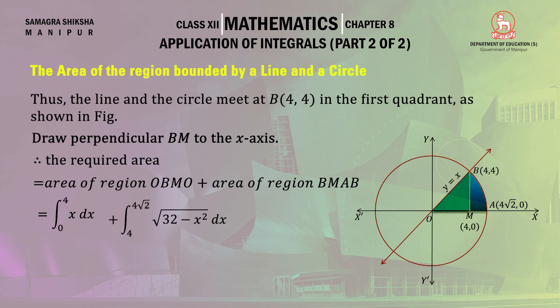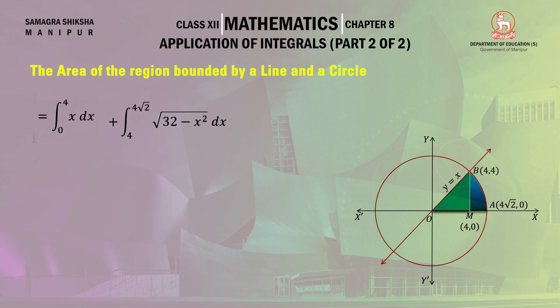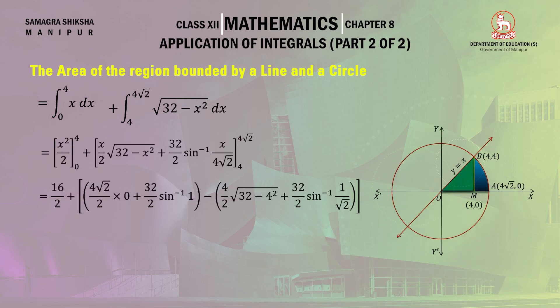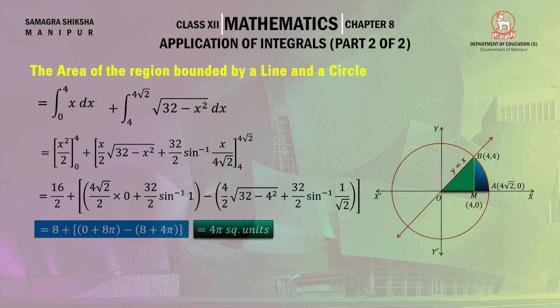The area of the green region is the definite integral from 0 to 4 of y dx, where y equal to x. The area of the blue region is the integral from 4 to 4 root 2 of y dx, where y is given by the equation of the circle as root over 32 minus x square. Evaluating using the fundamental theorem of integral calculus, the total area becomes 4 pi square units.